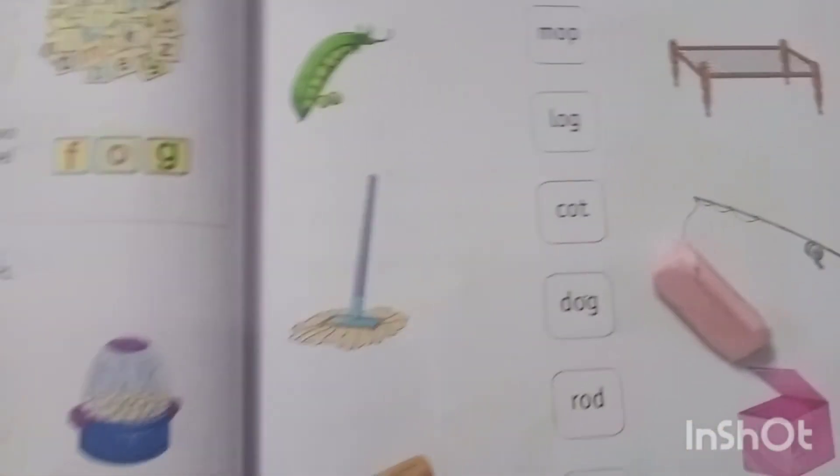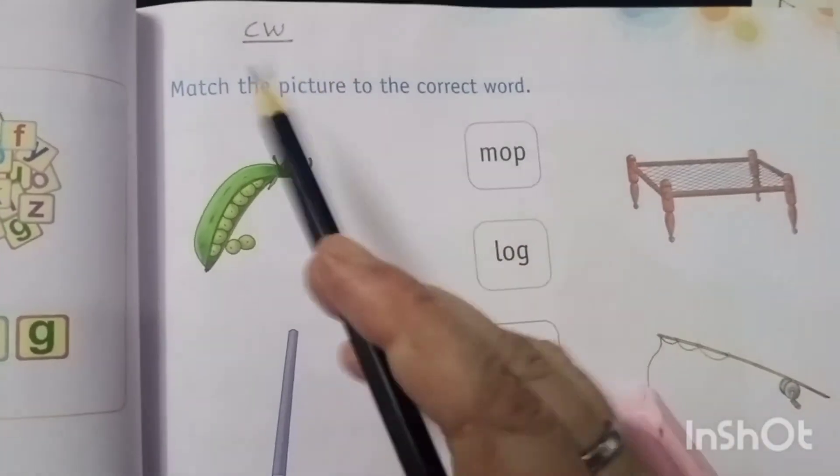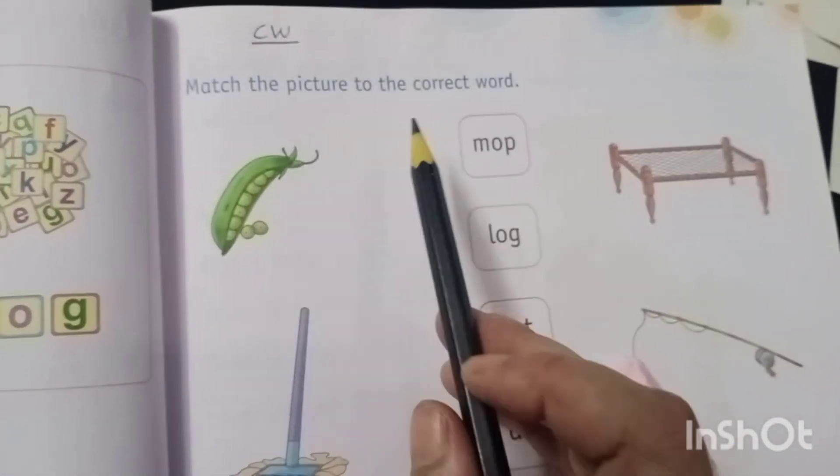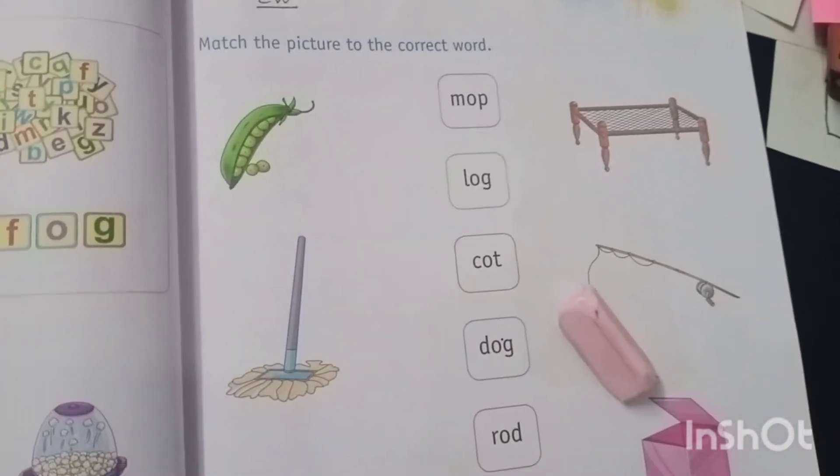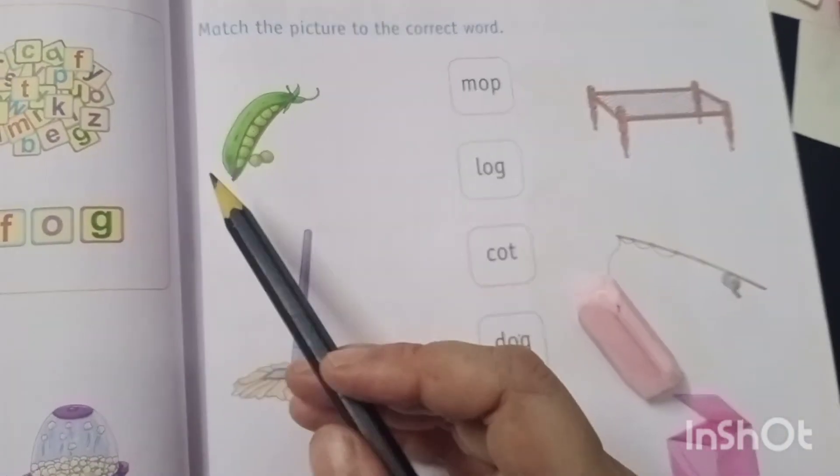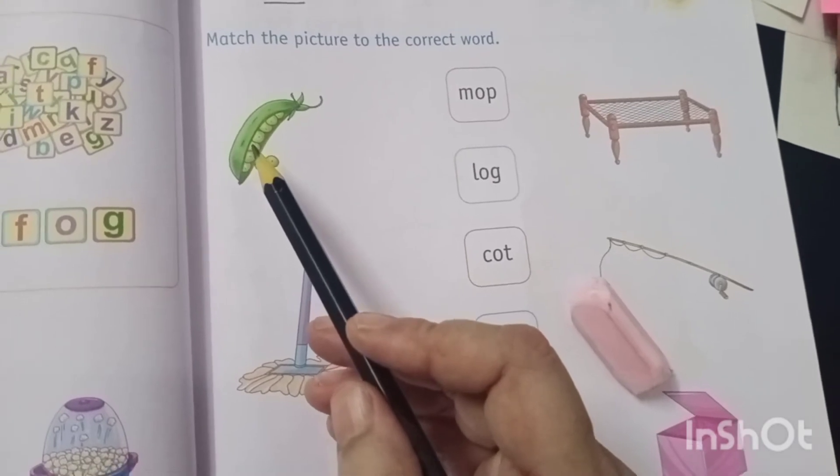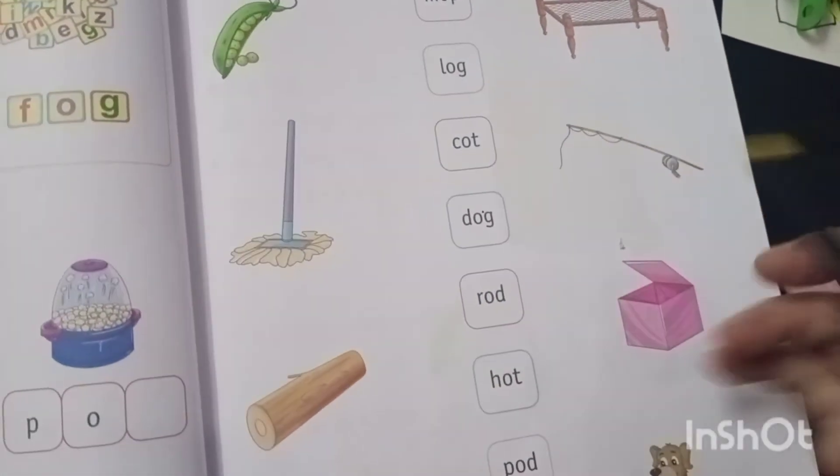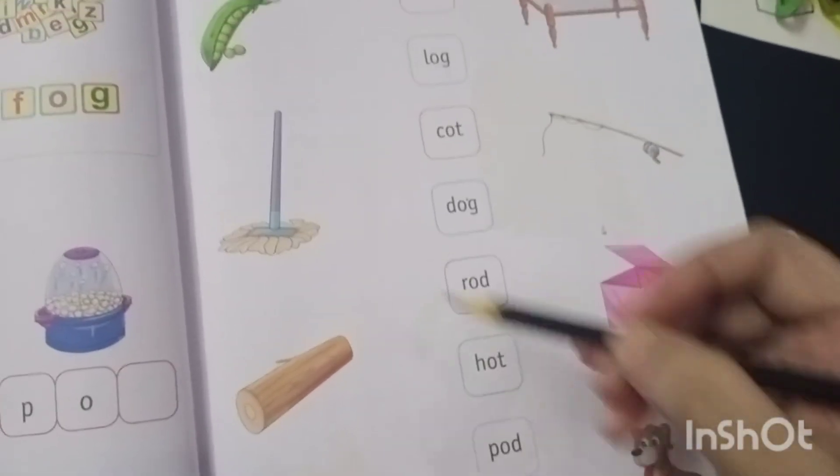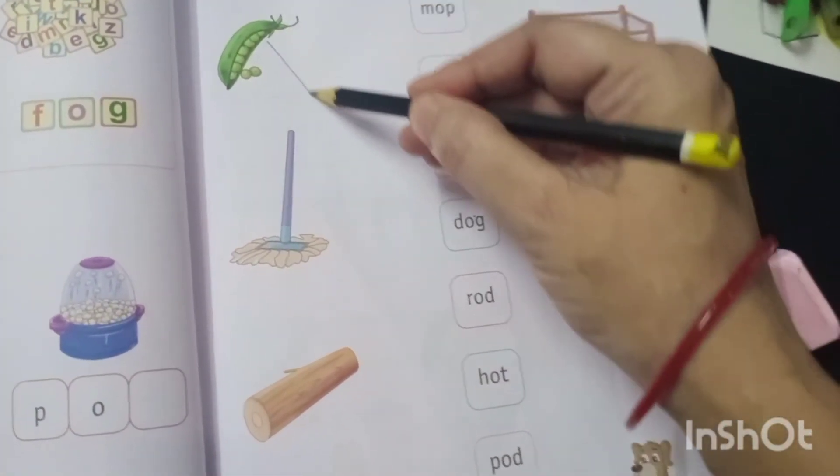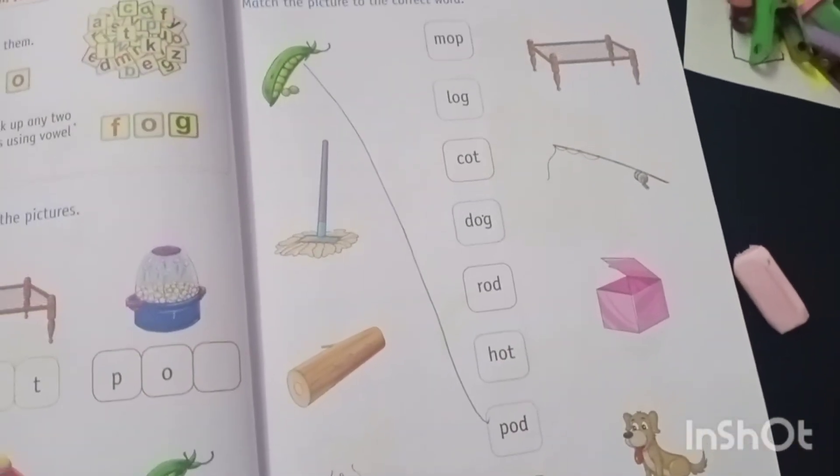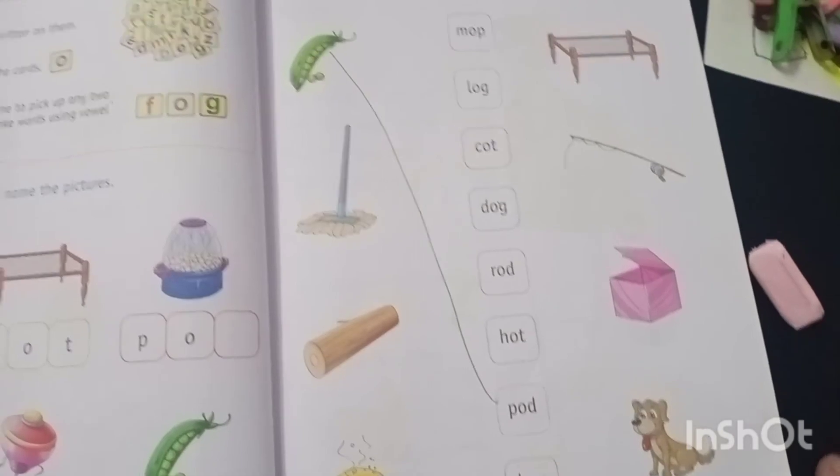Now next page is 37. It's your classwork. Match the pictures to the correct word. Like this, this is the picture of a pod. Now see, find the word pod. Yes, here is pod. Now you have to match it with the pod. Now complete this worksheet.